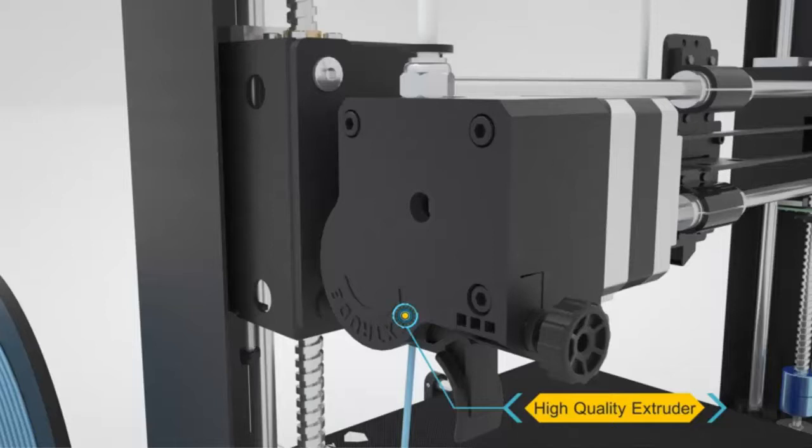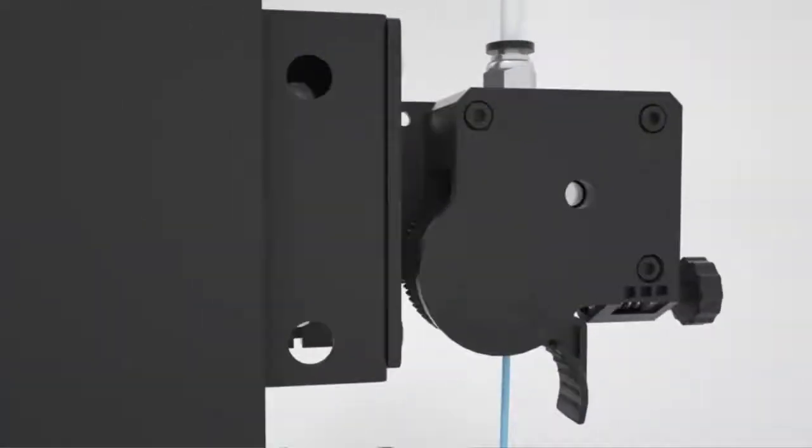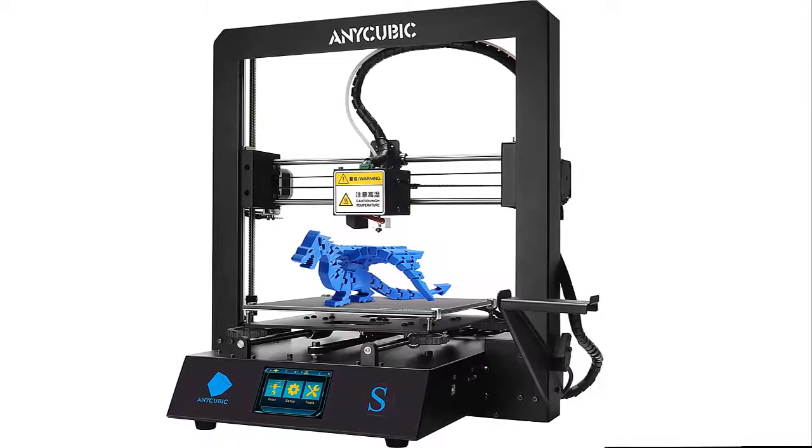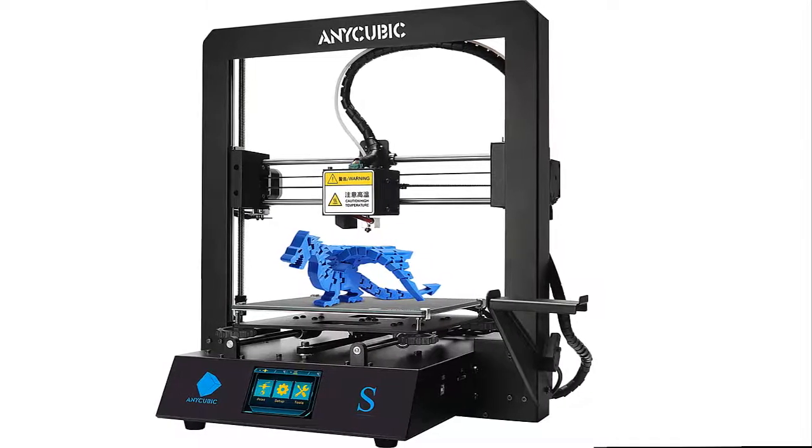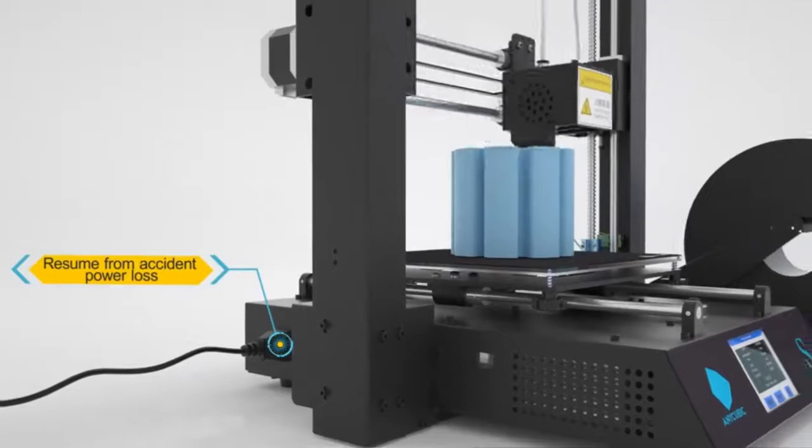Resume print and sensor detection. Mega S 3D printer can resume printing after a power outage or any other unexpected stoppage. One click to resume from the last recorded position when suffering power outages. And the sensor pauses prints and sets off an alarm when you run out of filament, which greatly saves time and cost.